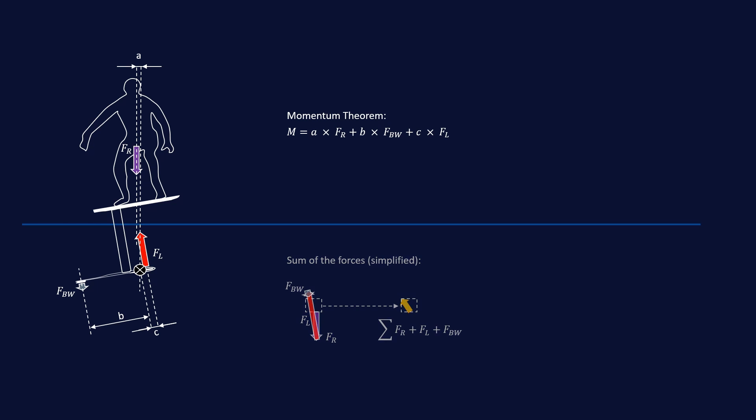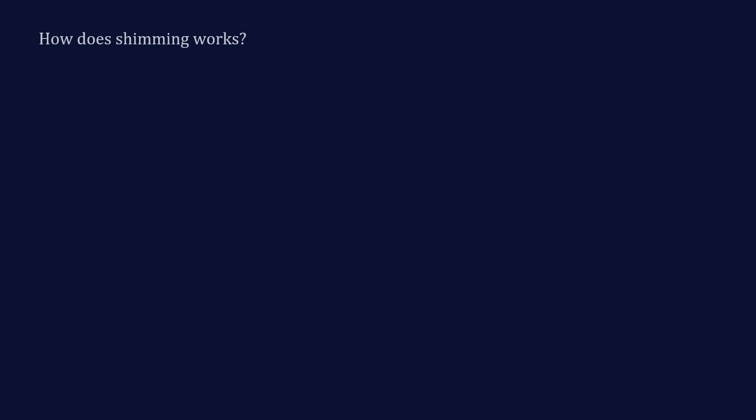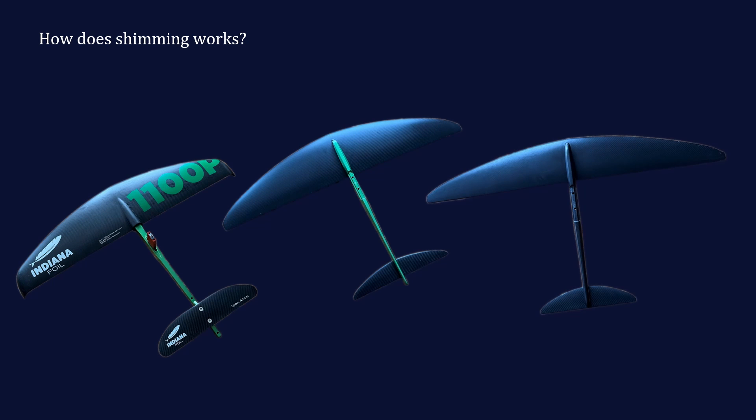So what happens now if we add a shim? By inserting a shim between the fuselage and the back wing, we change the angle of attack of the back wing and we start the lift of the back wing. Due to the change of the force of the back wing, the resulting momentum along the pitch axis is therefore changed. With this basic knowledge about how the force created by a wing can be changed, we will now look into shimming in more detail.